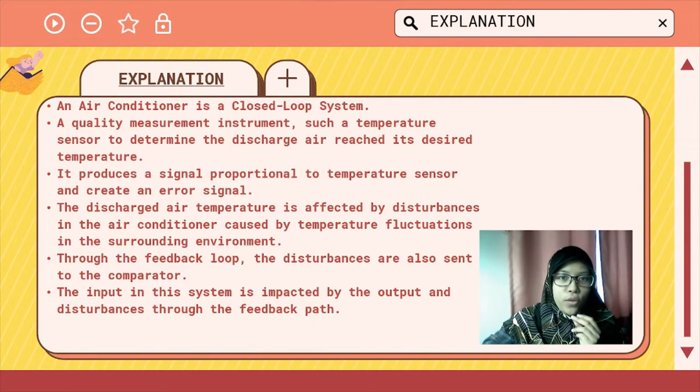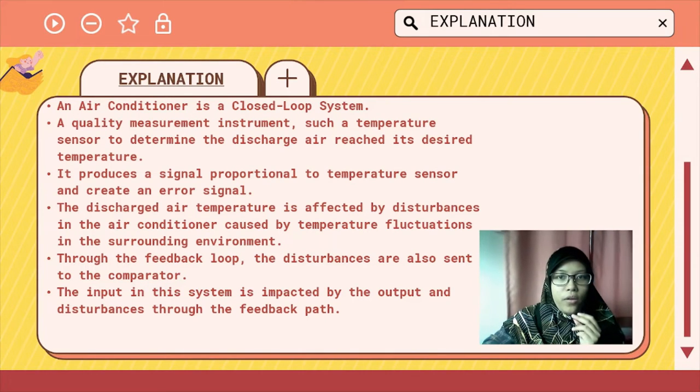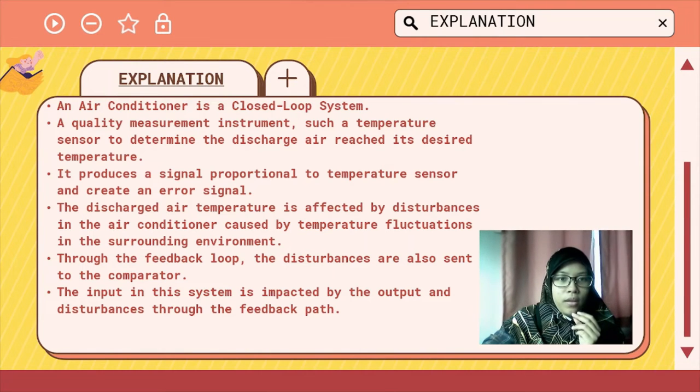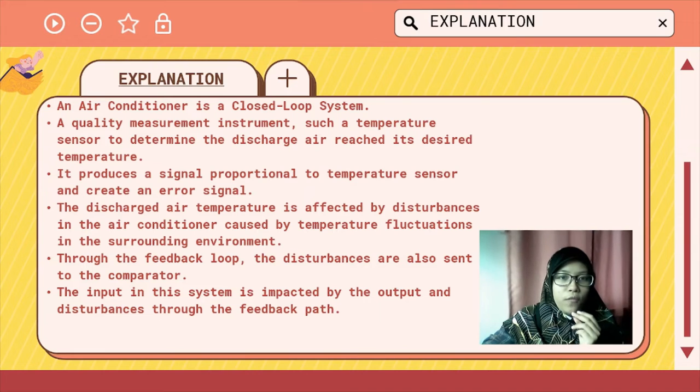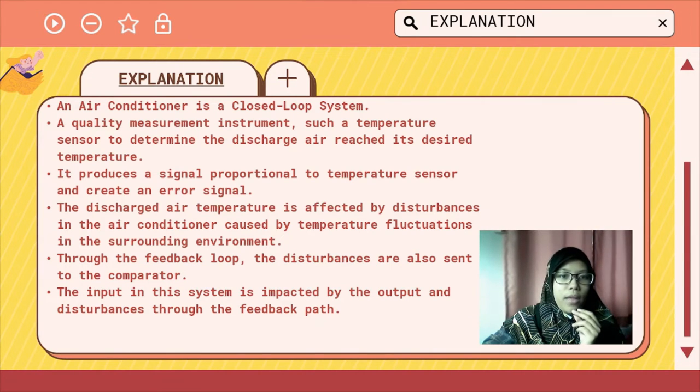Here's some explanation. An air conditioner is a closed loop system. It has a quality measurement instrument such as a temperature sensor to determine if the discharged air reaches its desired temperature. It produces a signal proportional to the temperature sensor and creates an error signal. The discharged air temperature is affected by disturbances in the air conditioner caused by temperature fluctuations in the surrounding environment. Through the feedback loop, the disturbances are also sent to the comparator. The input in the system is impacted by the output and disturbance through the feedback path.